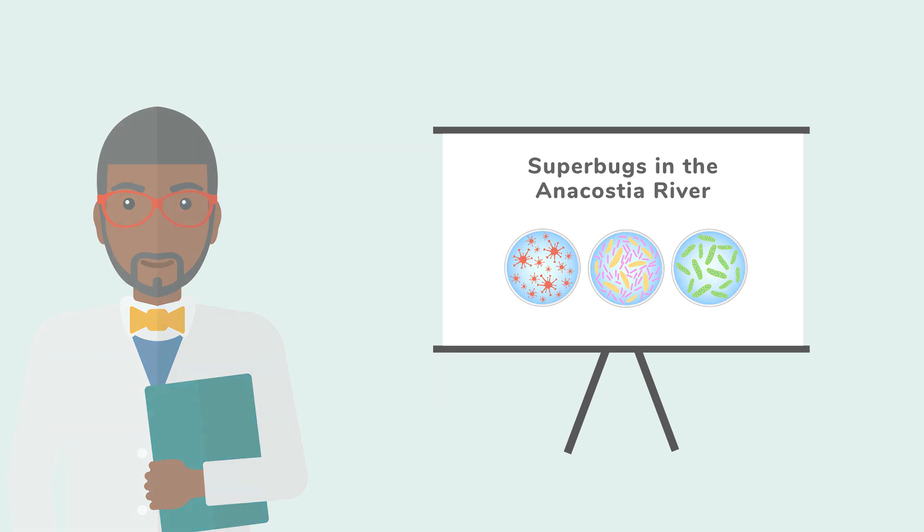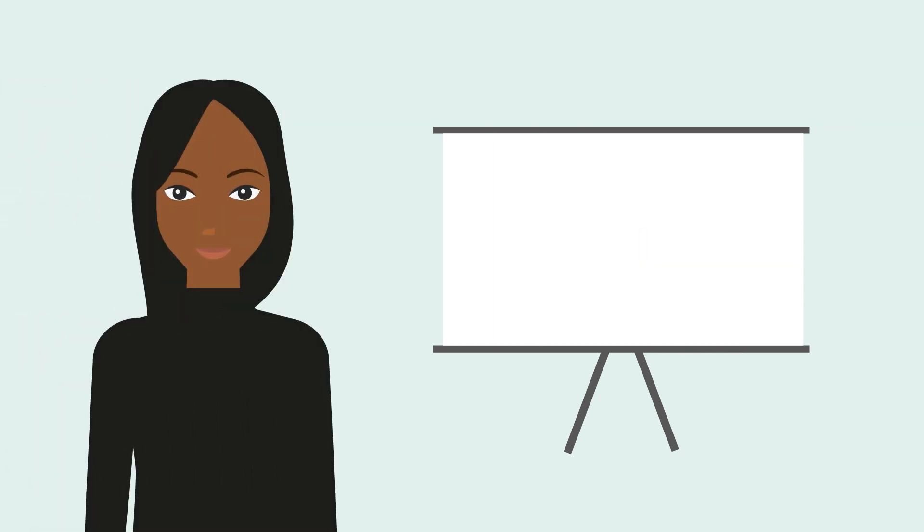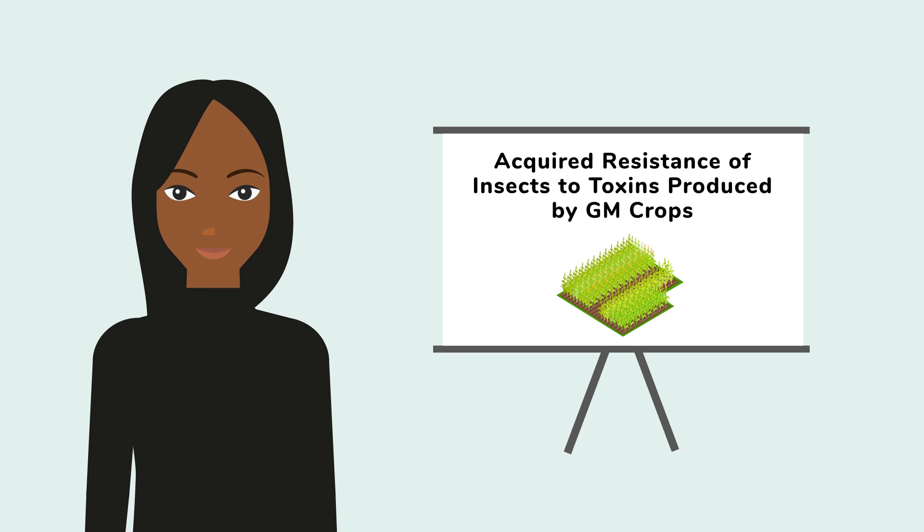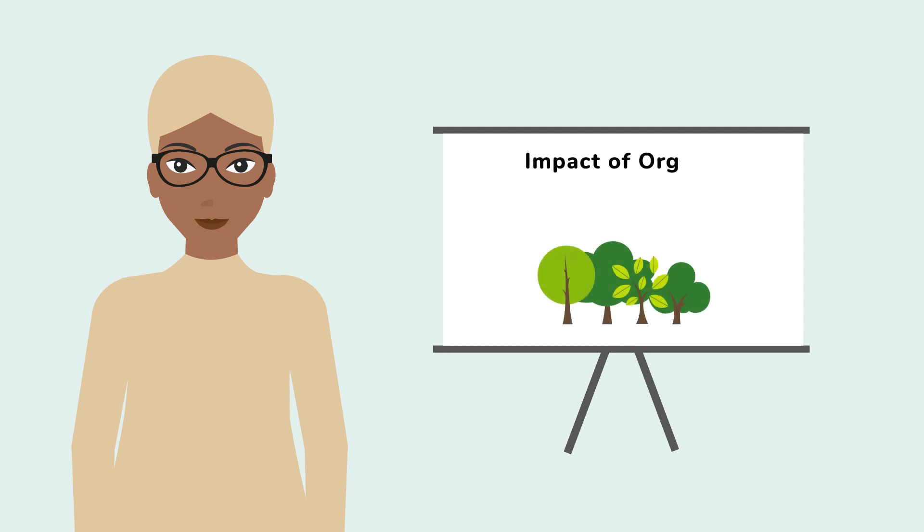The student projects are highly varied. For instance, Dominique Desmerat investigated the acquired resistance of insects to toxins produced by genetically modified crops, and Danya Khan studied how soil can be improved through organic fertilizing methods.